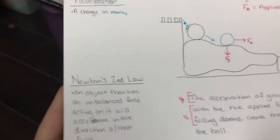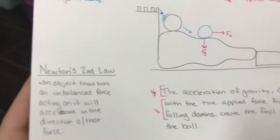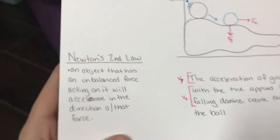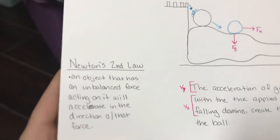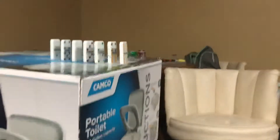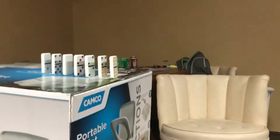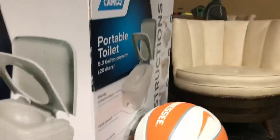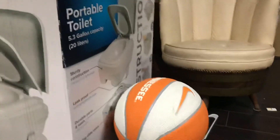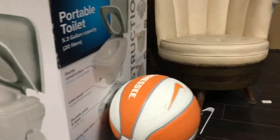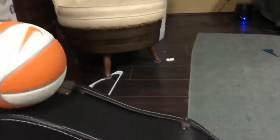Newton's second law states that an object that has an unbalanced force acting on it will accelerate in the direction of that force. Because the domino contacts the ball behind it, it is pushing it forwards.